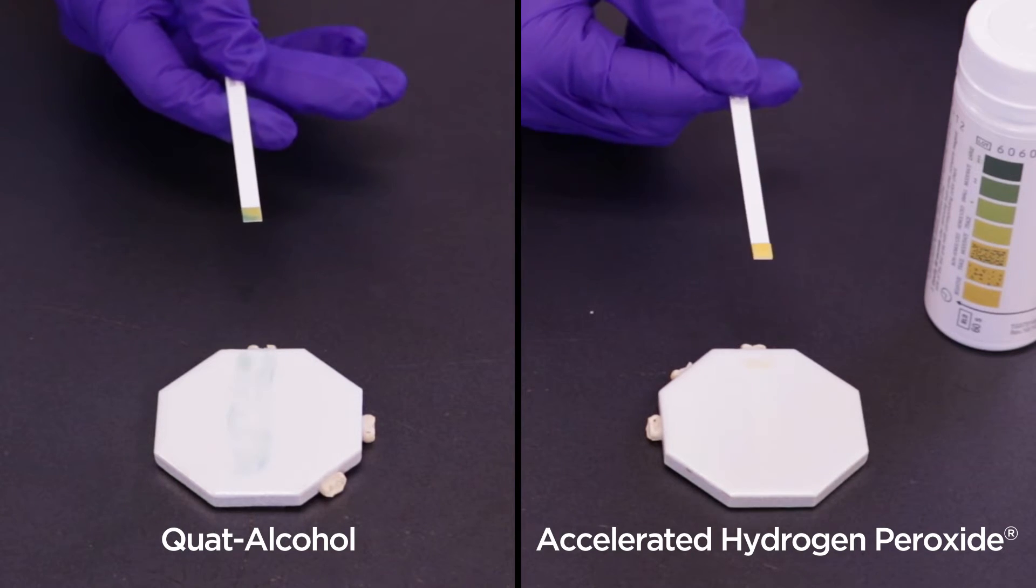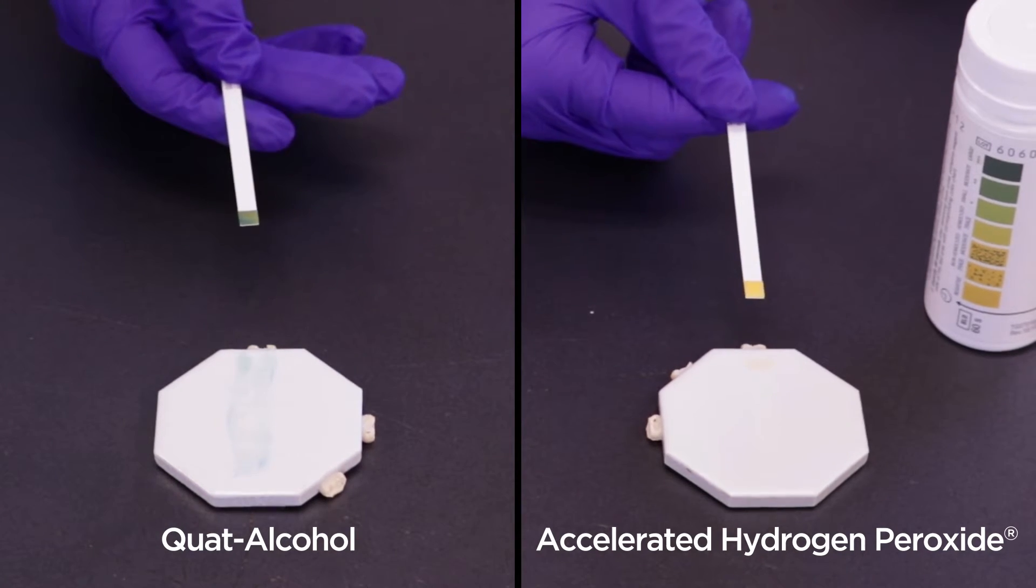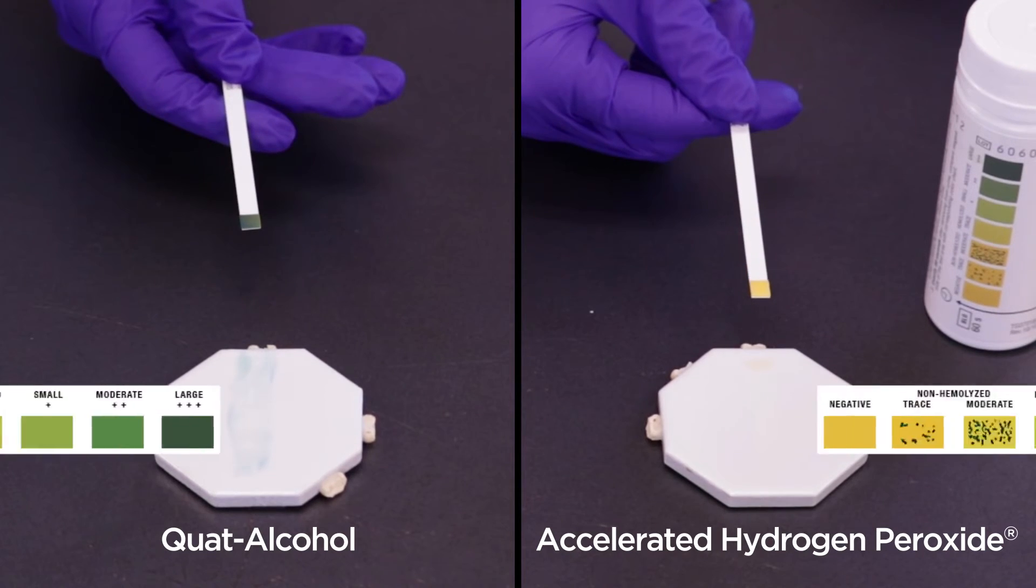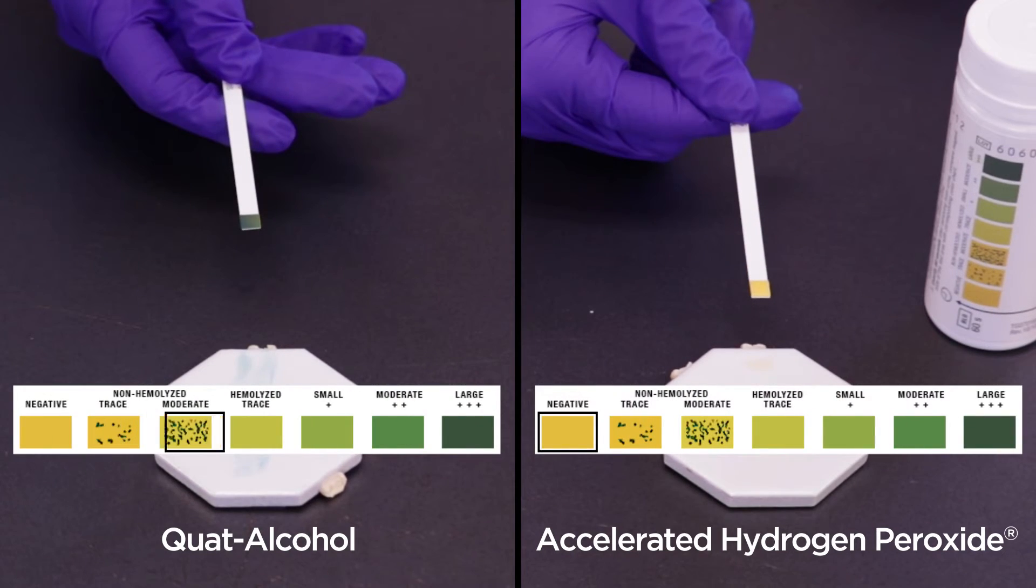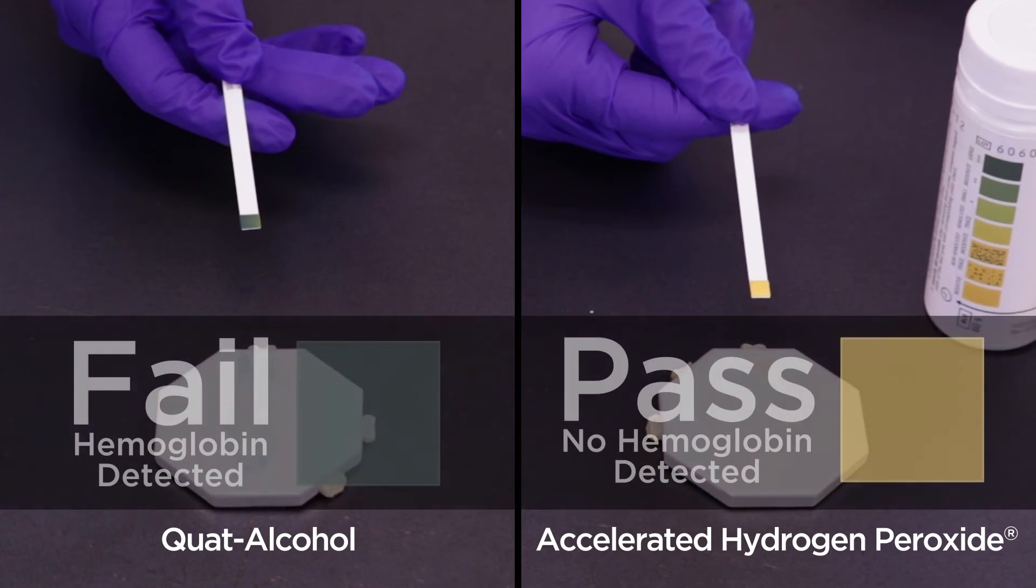Accelerated hydrogen peroxide utilizes superior surfactants that results in effective cleaning to efficiently remove soils, ensuring you will kill the pathogens you are most concerned with.